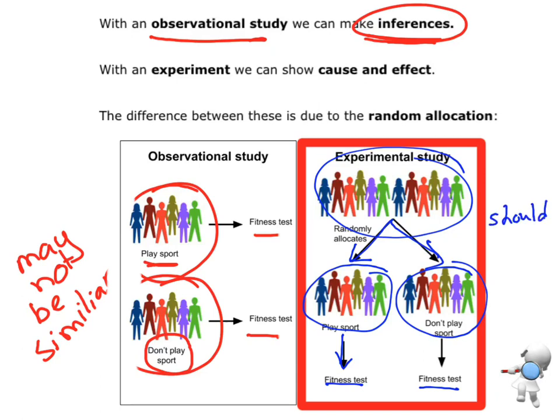They should be similar in all of their characteristics. So that is a really vital part of being able to do an experiment. Is to be able to show that these two groups are very similar. And the only thing that is different.